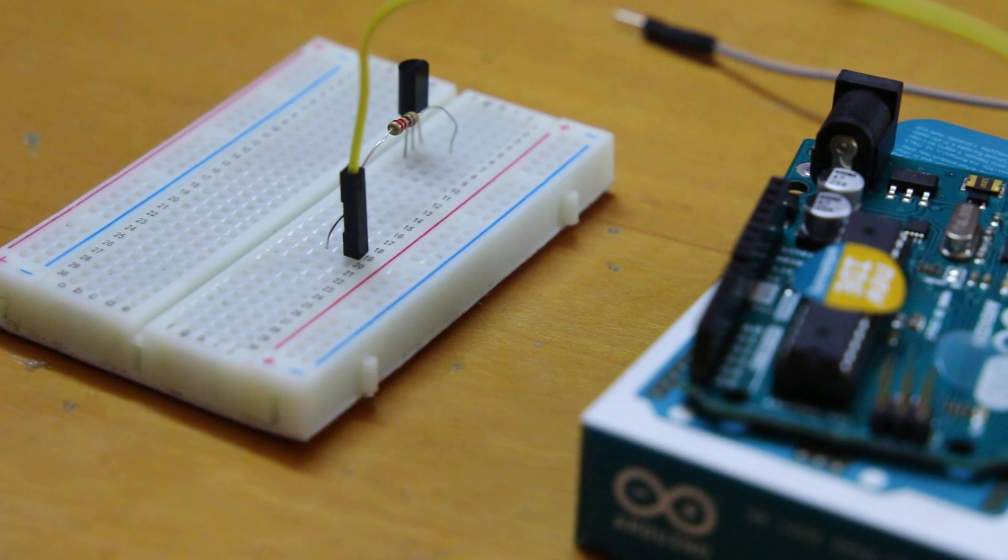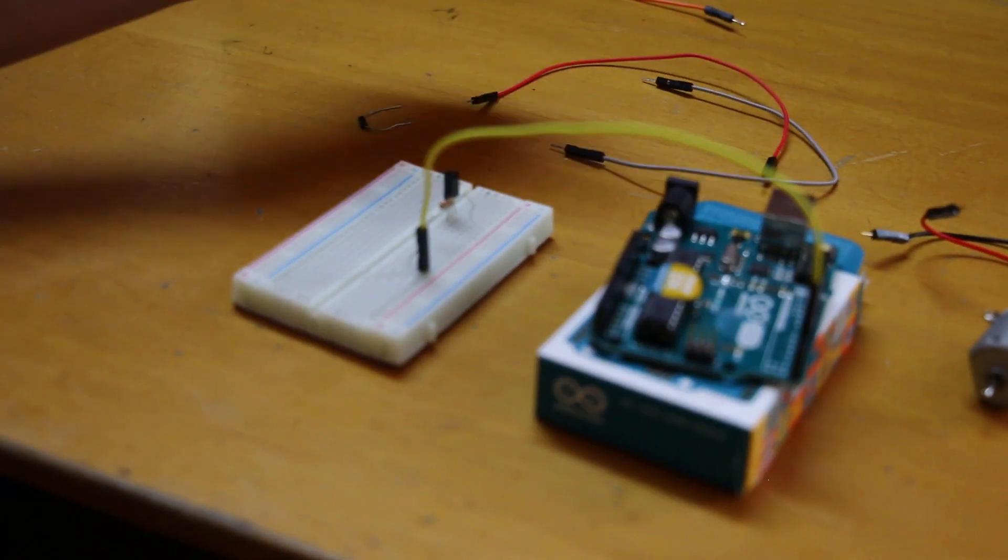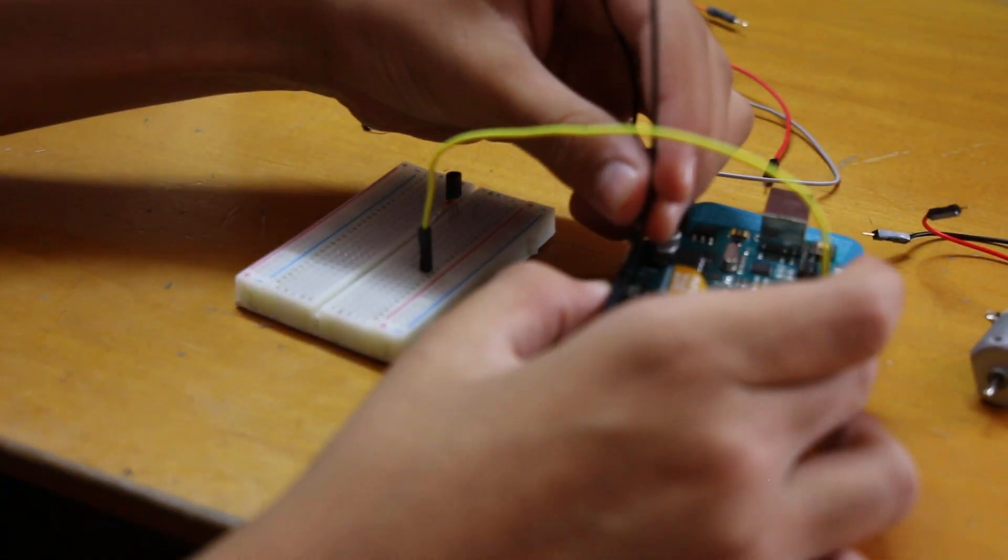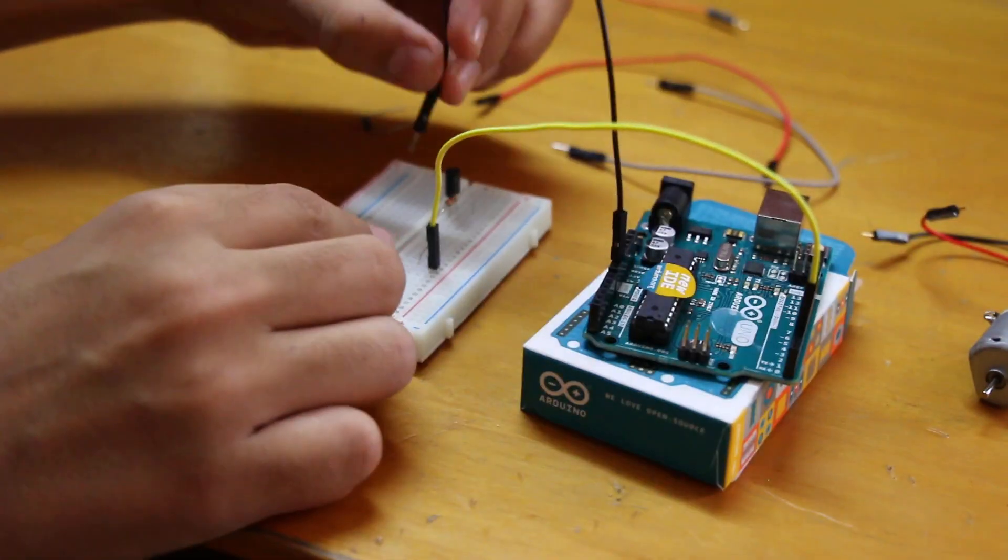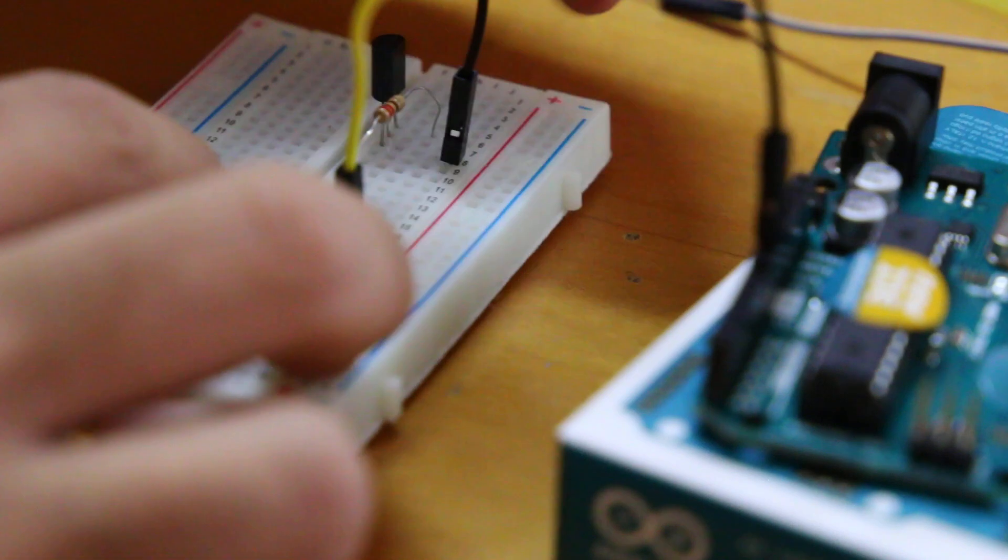So now the next step is to connect the emitter to the ground. So we just take the ground from the Arduino, which has three ground pins, put it on, and then put it to the emitter, which is over here. So now we have that connected.